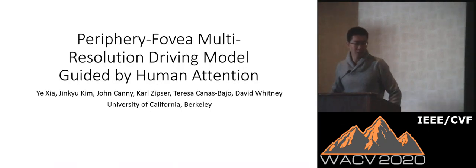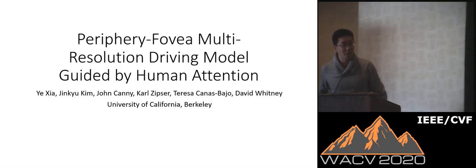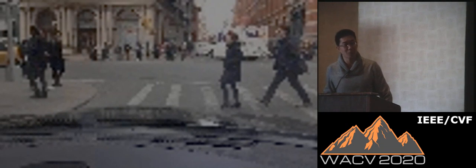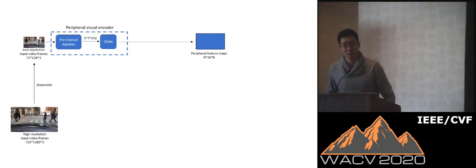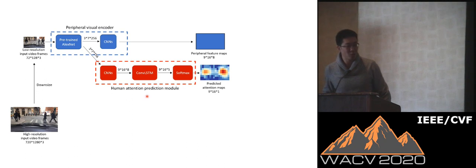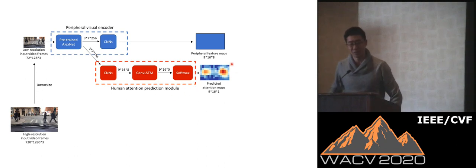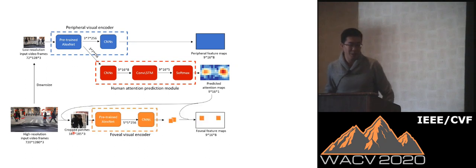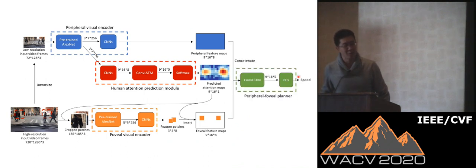Good afternoon. My name is Ye. I'm presenting our work, Peripheral Foveal Multi-Resolution Driving Model, Guided by Human Attention. Humans have distinct peripheral vision and foveal vision. Our peripheral vision covers most of the visual field but has low resolution. Our foveal vision is localized but has high resolution. Inspired by human vision, we propose our deep driving model. Our peripheral visual encoder uses very low input resolution to efficiently process long-range scene structures. A human attention prediction module also operates on the low resolution input to predict where human drivers will look, separately trained with human driver eye movement data. High-resolution image patches are cropped from predicted salient regions and processed by our foveal visual encoder, and the output feature maps of the two encoders are concatenated to predict the speed of the vehicle.